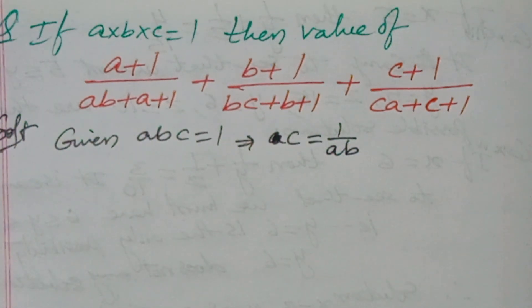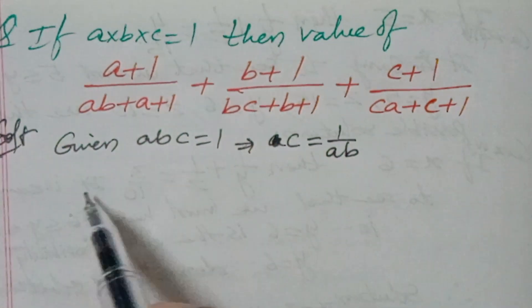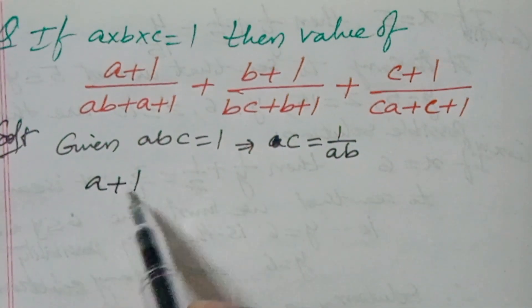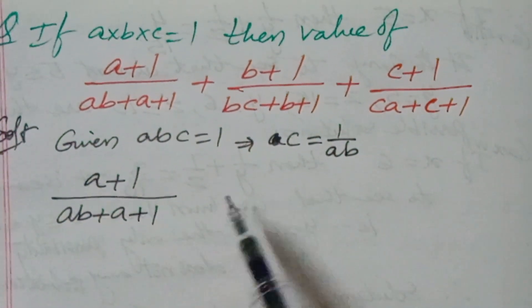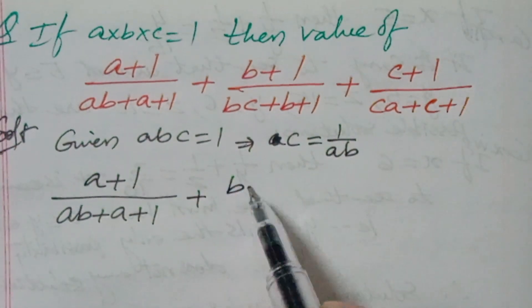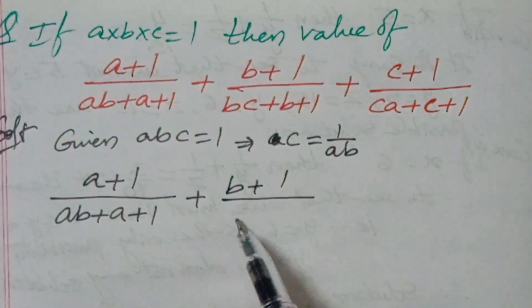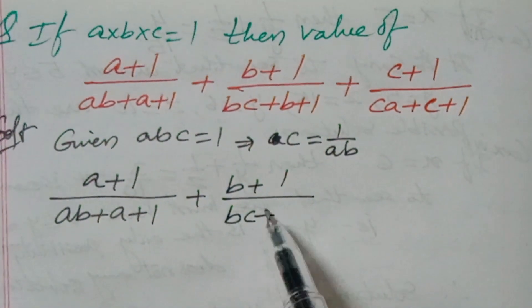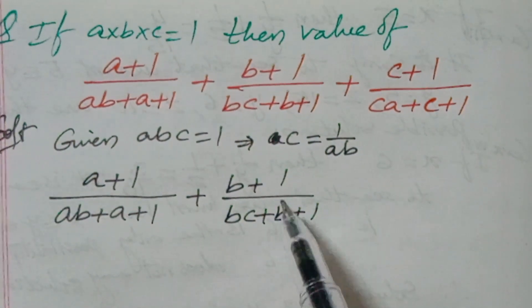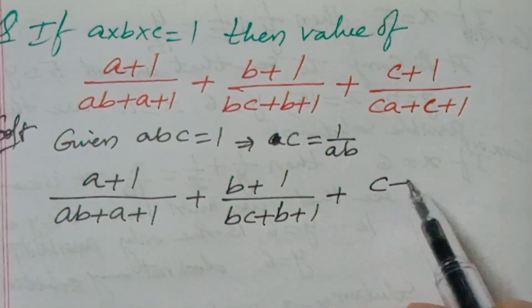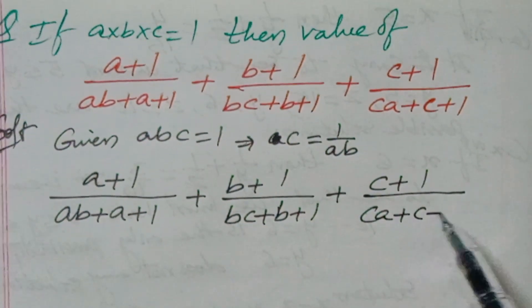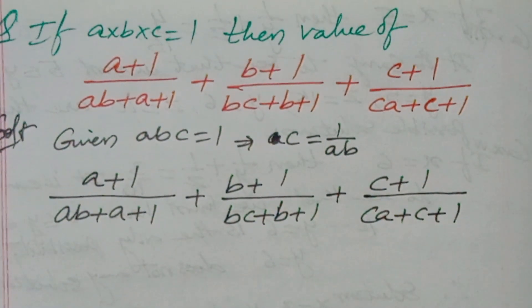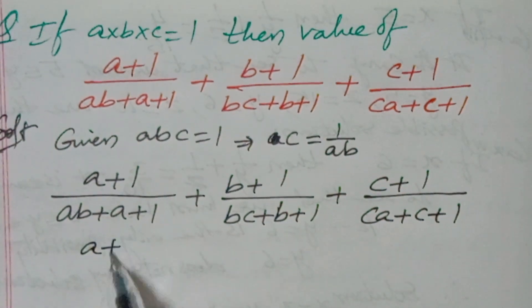So the second point: a plus 1 by ab plus a plus 1. I'm just writing the question: b plus 1 by bc plus b plus 1, c plus 1 by ca plus c plus 1. Now the second step, that is the logic you have to know.